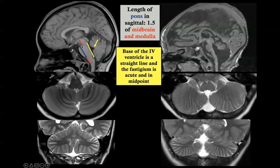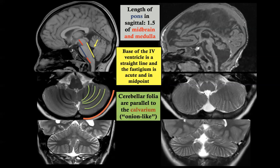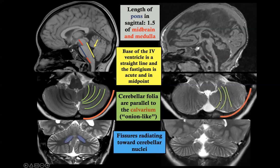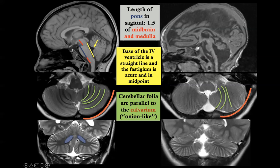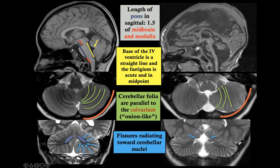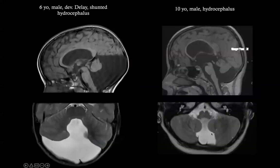If you have an abnormal brainstem ratio patterning defect, or a problem with the fastidium, you may be dealing with Dandy-Walker. The cerebellar folia should be parallel to the calvarium, giving an onion-line shape. Finally, the fissures should radiate toward the cerebellar nuclei — in particular, the dentate nuclei. You can see the difference here: normal on the left, abnormal fissures on the right.